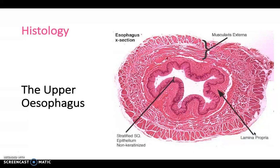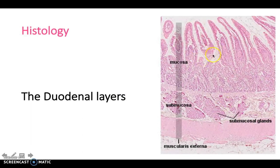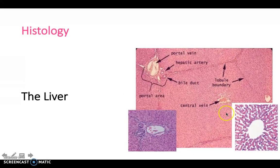Now a brief guide to histology. The upper esophagus shows stratified squamous non-keratinized epithelium and a prominent muscularis layer, reflecting its muscular nature for peristalsis. The stomach shows characteristic layers: mucosa, submucosa and muscularis mucosa. The duodenum shows mucosa, submucosa and clearly visible villi. For the liver, make sure you can identify the central vein, bile ducts, hepatic arteries and portal vein — particularly the portal triad made up of the hepatic artery, portal vein and bile duct on histological slides.